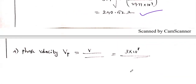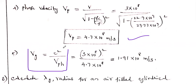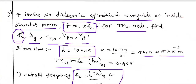Phase velocity Vp = C / √(1 − (Fc/f)²) = 4.7×10^8 m/s. Group velocity can be found using Vg = C² / Vp, or alternatively Vg = C × √(1 − (Fc/f)²). The answer is Vg = 1.91×10^8 m/s. So phase velocity and group velocity are both calculated.